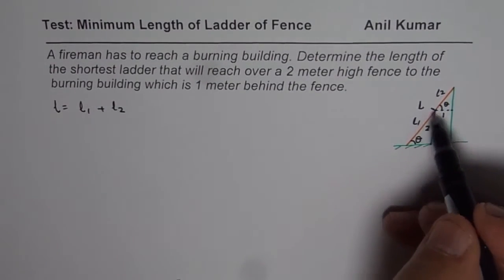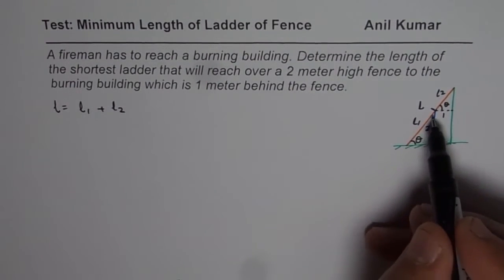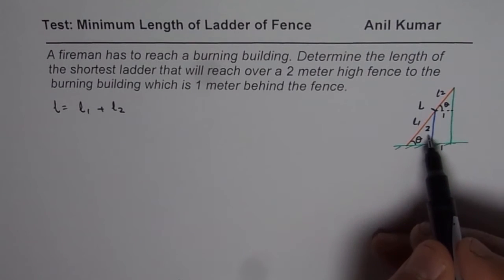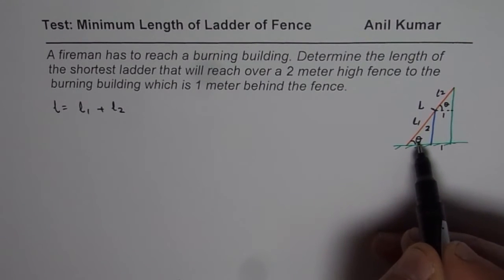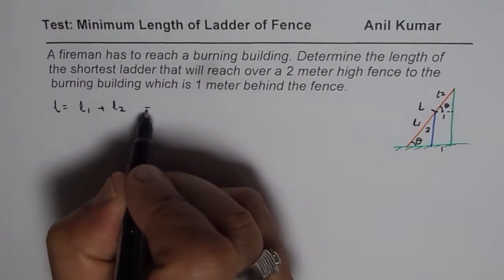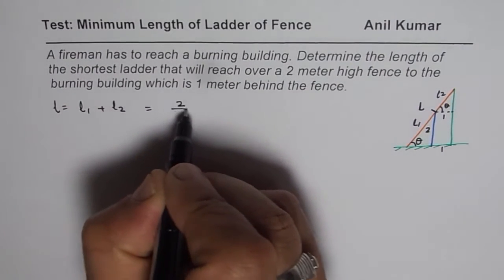Now how to find L1 and L2? If you see that small triangle here, in this triangle we are given the opposite side which is 2 and therefore L1 is 2 over sine theta. So we could write this as equals to 2 over sine theta.